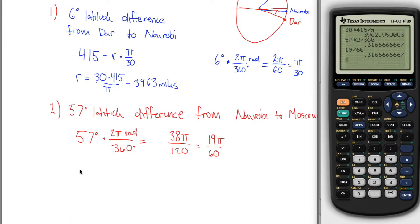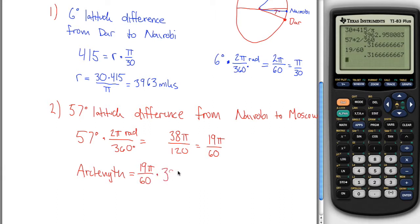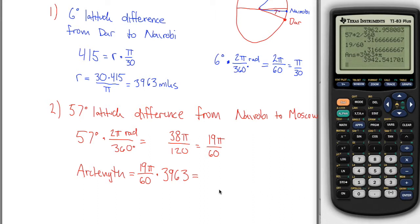So this is the radians difference from Nairobi to Moscow. Then we can figure out that the arc length, we know that arc length is just radians, which is 19 pi over 60 times the radius, which we figured out was 3963. And you can plug that into a calculator, it's that thing times 3963 times pi. And what you get is that the distance around the outside, the arc length from Nairobi to Moscow is 3,943 miles, long way.